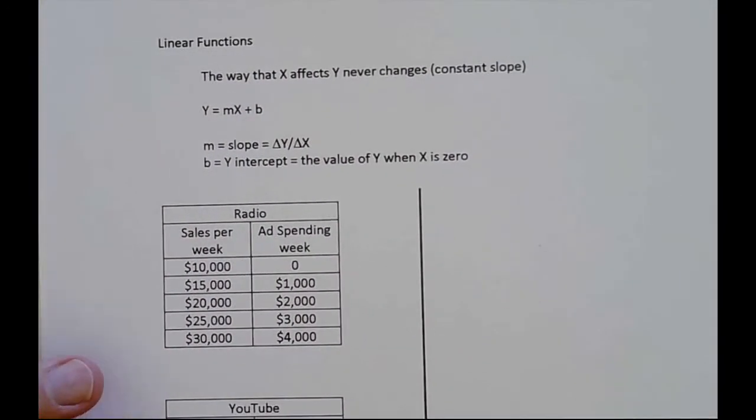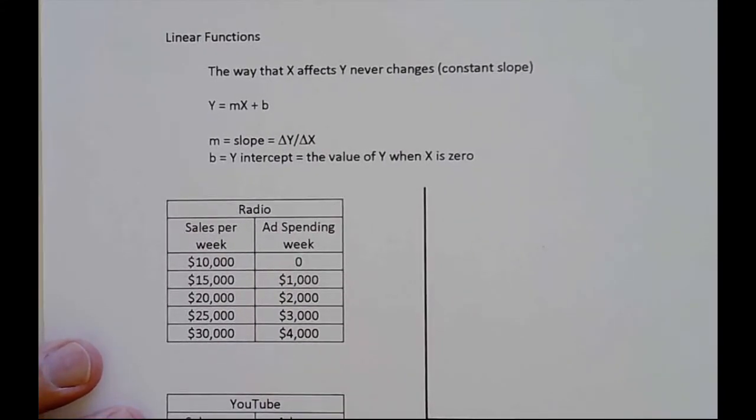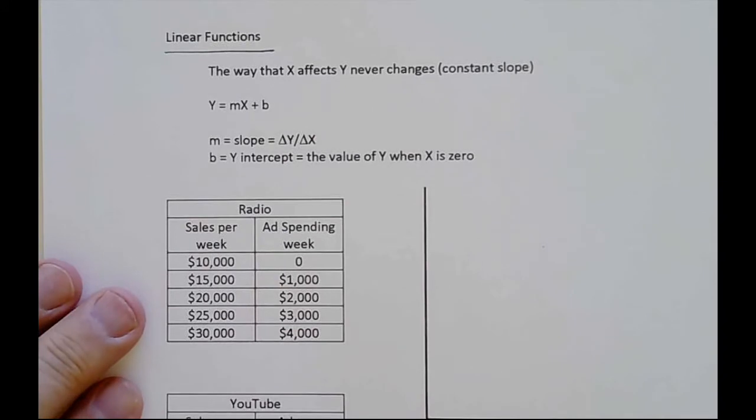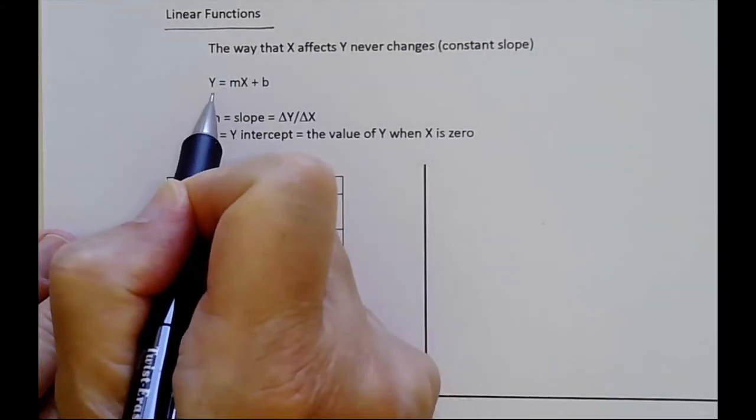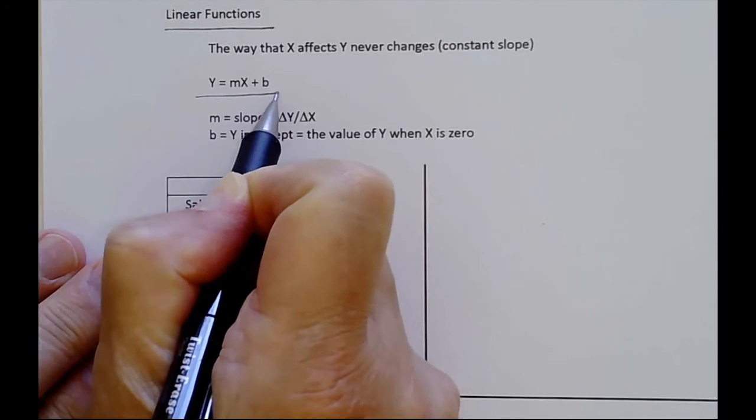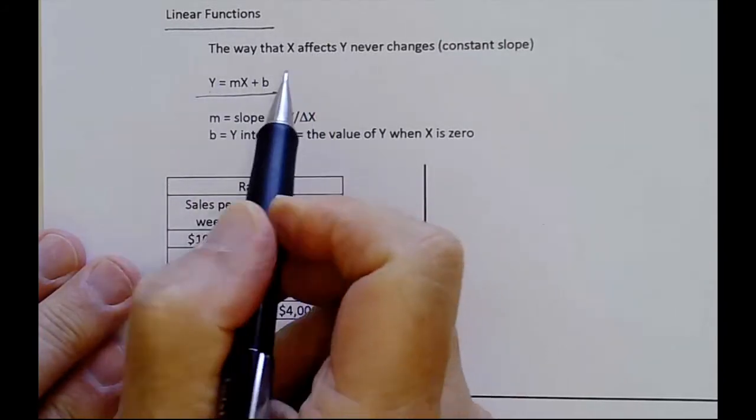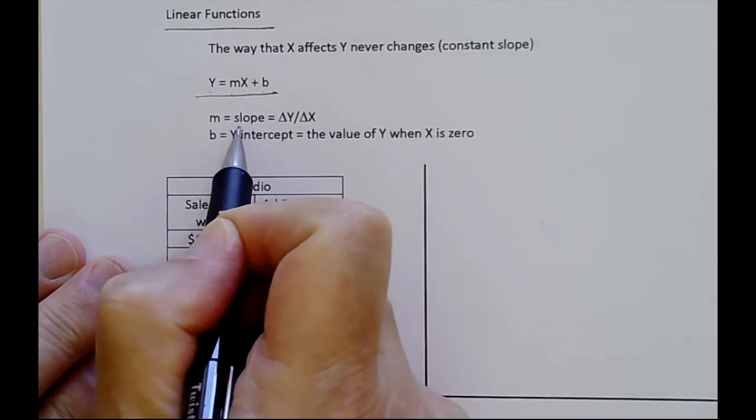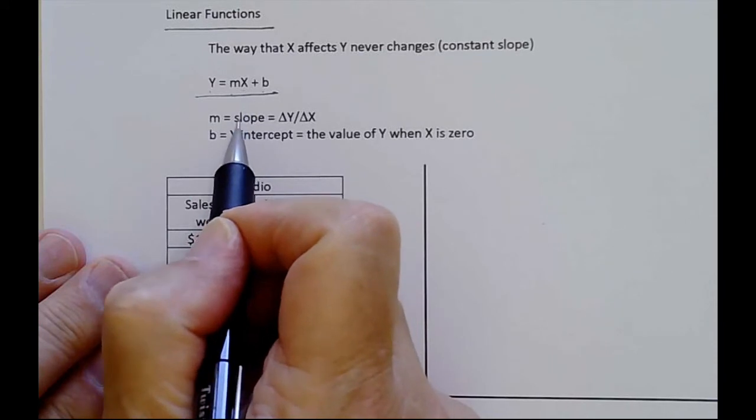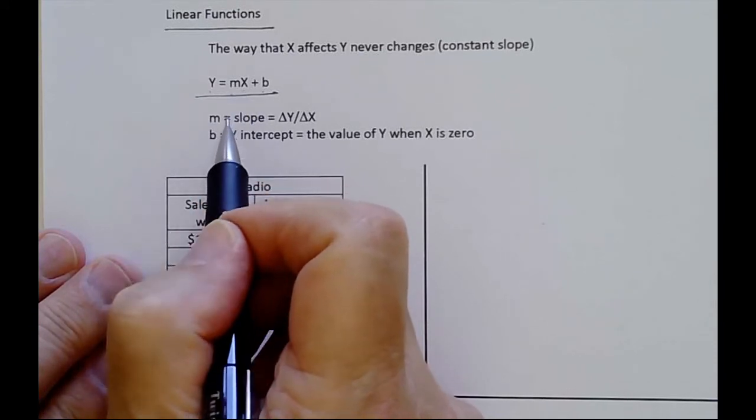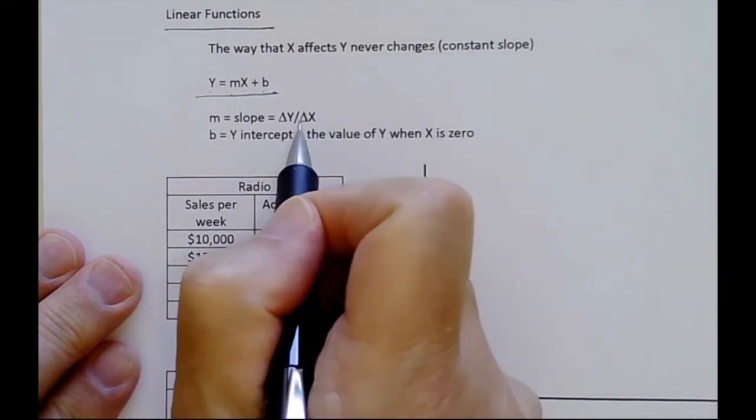We have some functions in this class, but we're going to use the simplest type of functions, which are linear functions. What's nice about linear functions is the way that x affects y never changes. So x has a constant effect on y. If x goes up by 1 each time, it has the same impact on y each time. Typically you see it written this way: Y equals mx plus b, where m is your slope and that tells us what happens to y if x changes. That would be the change in y variable over the change in x variable.